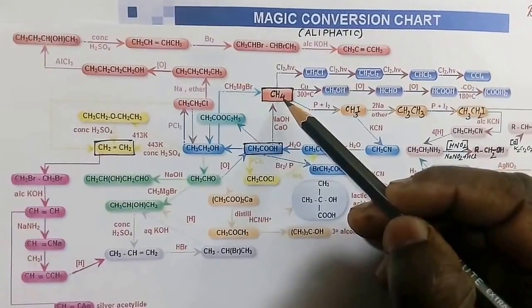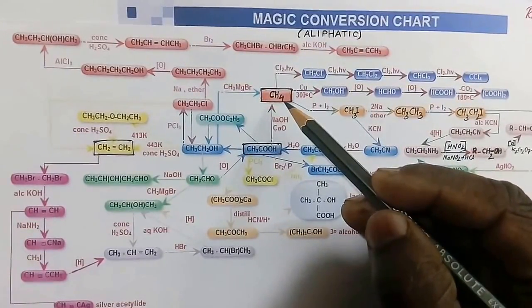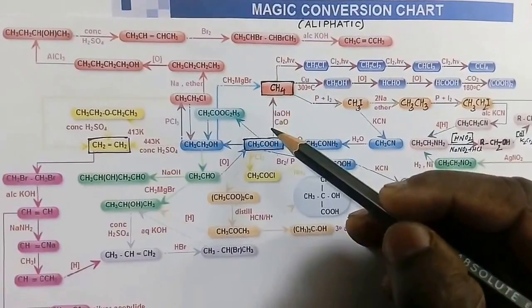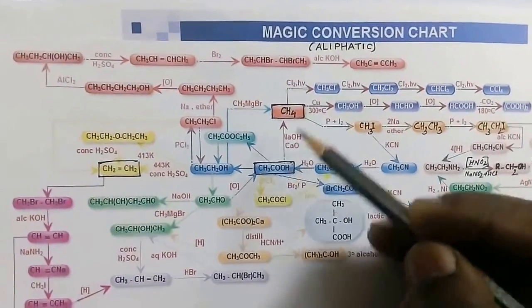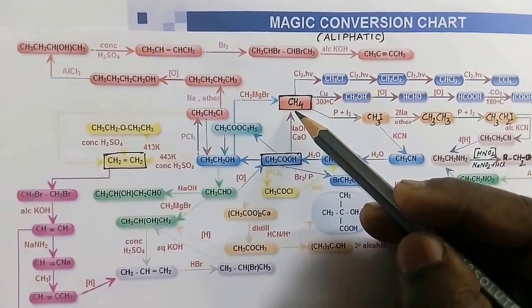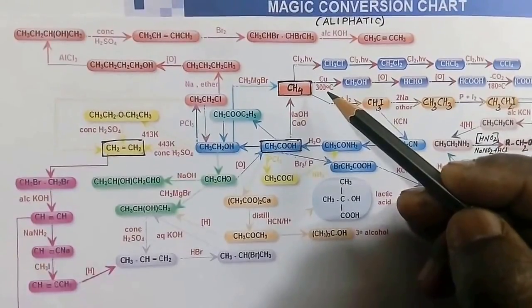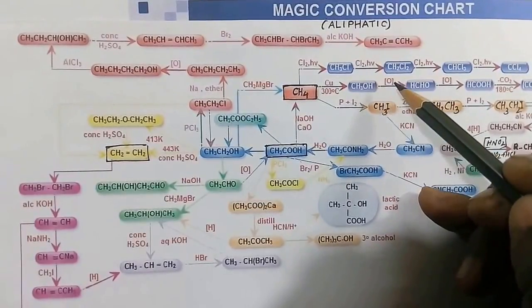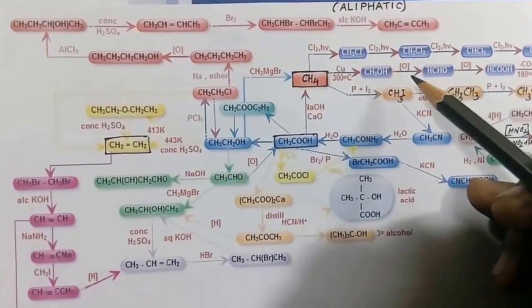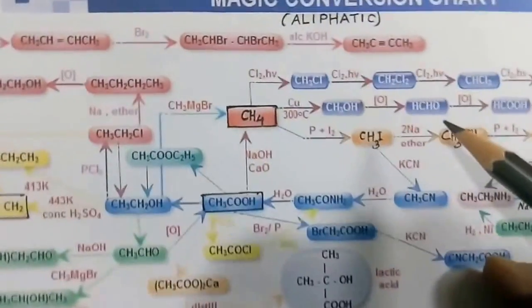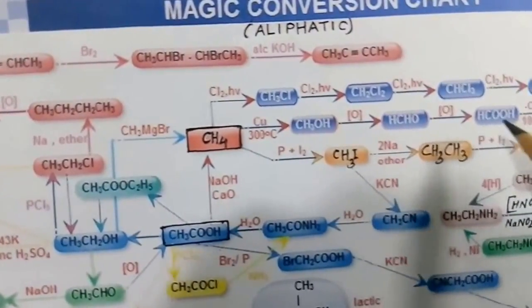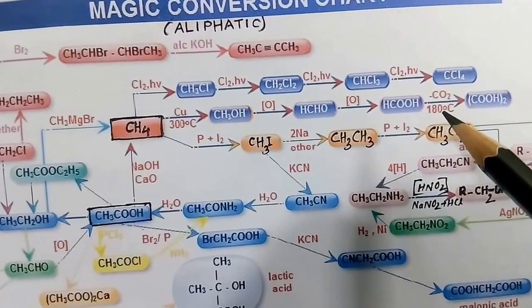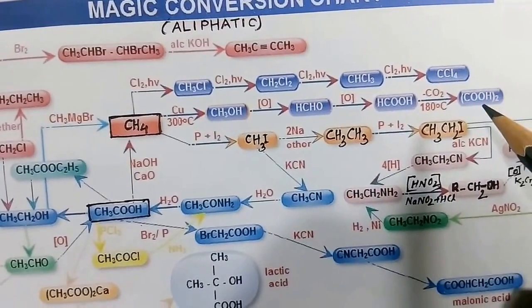In this chart, three or four key compounds are the starting points. Starting from methane: methane can be treated with a copper catalyst at about 300 degrees centigrade and we get methanol. Methanol on further oxidation forms formaldehyde. Methanol on further oxidation forms formic acid. Formic acid at about 180 degrees centigrade gives oxalic acid.